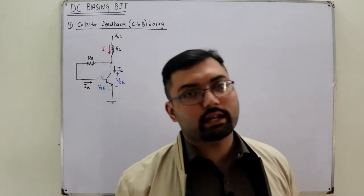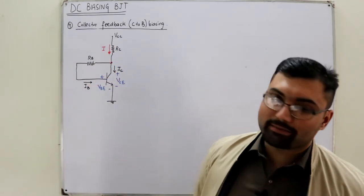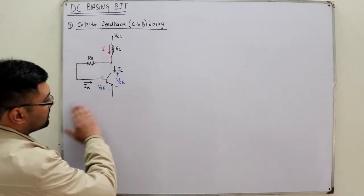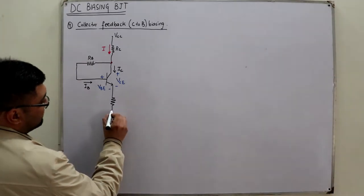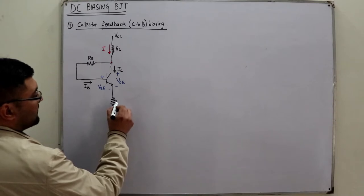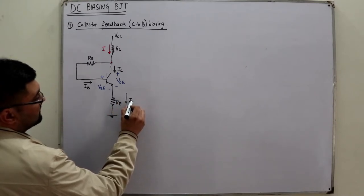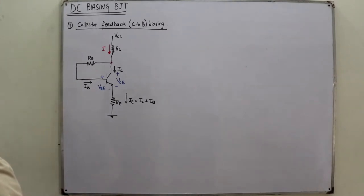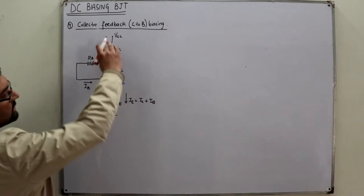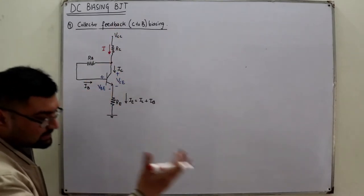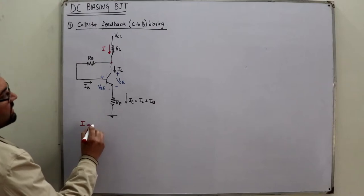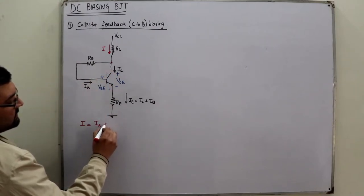Bismillahirrahmanirrahim. Assalamu alaikum. Continuing the topic of collector feedback biasing, this time we have an emitter resistance included as well. So the emitter terminal is not solidly grounded — you have an emitter resistance RE first and then it is grounded. The current flowing is IE which equals IC plus IB. The collector current IC does not flow directly through RC; the current through RC is IB plus IC by KVL.